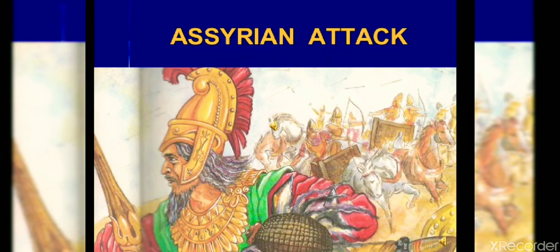At that time, some people used to perform what seemed like miracles or display special powers, and others used to worship them. You can see similar things even now in many parts of the world. These individuals became ruling allies, people believed in them, and from this developed the ruling system.